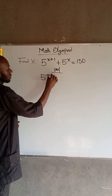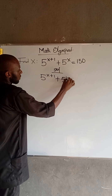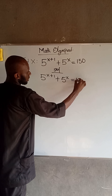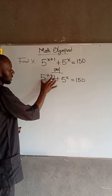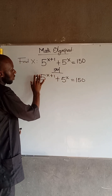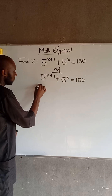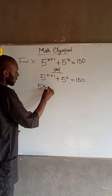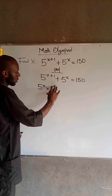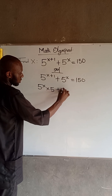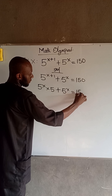5 to the power of x plus 1, plus 5 to the power of x, is equal to 150. At this point, we can apply the law of indices here. So we have that this is 5 to the power of x times 5 to the power of 1, which is equal to 5, plus 5 to the power of x is equal to 150.